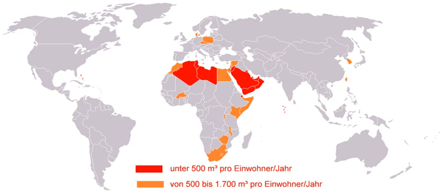The 1977 Mar del Plata United Nations Conference on Water was the first intergovernmental water conference, leading to the 1980 Declaration of the International Drinking Water Supply and Sanitation Decade by the UN General Assembly. The United Nations Environmental Programme hosts water resource policy-making agencies and disseminates BMPs worldwide, a role enhanced by various policy directives and other initiatives.